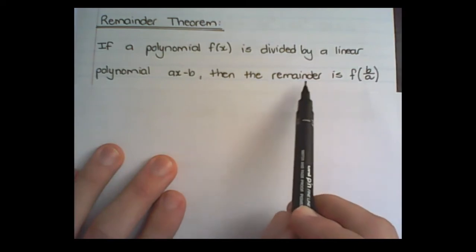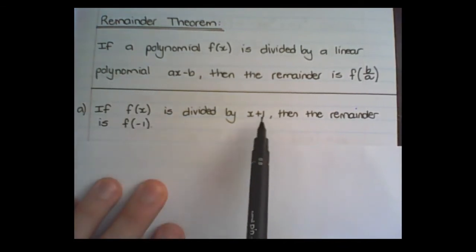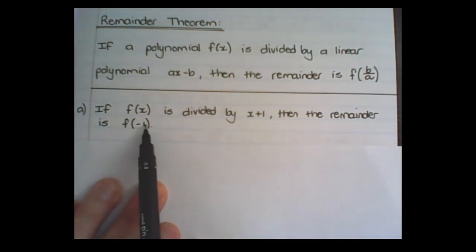The remainder theorem applied: I have f(x), some sort of expression, and let's say I divide it by x + 1. Then the remainder would be f(-1), so in the place of x I replace it with negative one. Let's work through a more practical example.